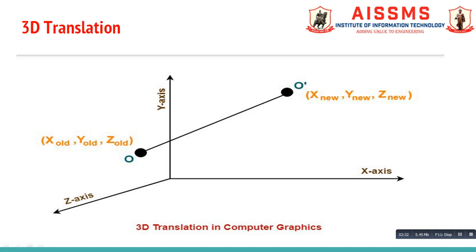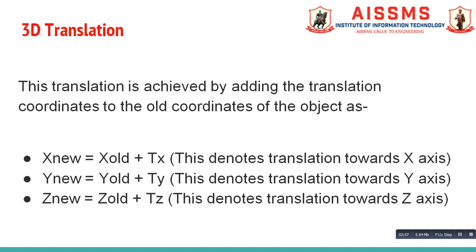In this figure, you can see the 3D translation in computer graphics. Here X old, Y old and Z old are the coordinates of a point before translation, and X new, Y new and Z new are the coordinates of a point after translation. This translation is achieved by adding the translation coordinates to the old coordinates. X new is equal to X old plus TX, where TX is the translation factor along the X axis.